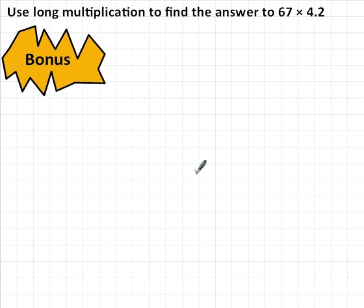In this bonus video, I'm going to show you how to multiply decimal numbers using long multiplication. First example, use long multiplication to find the answer to 67 times 4.2.